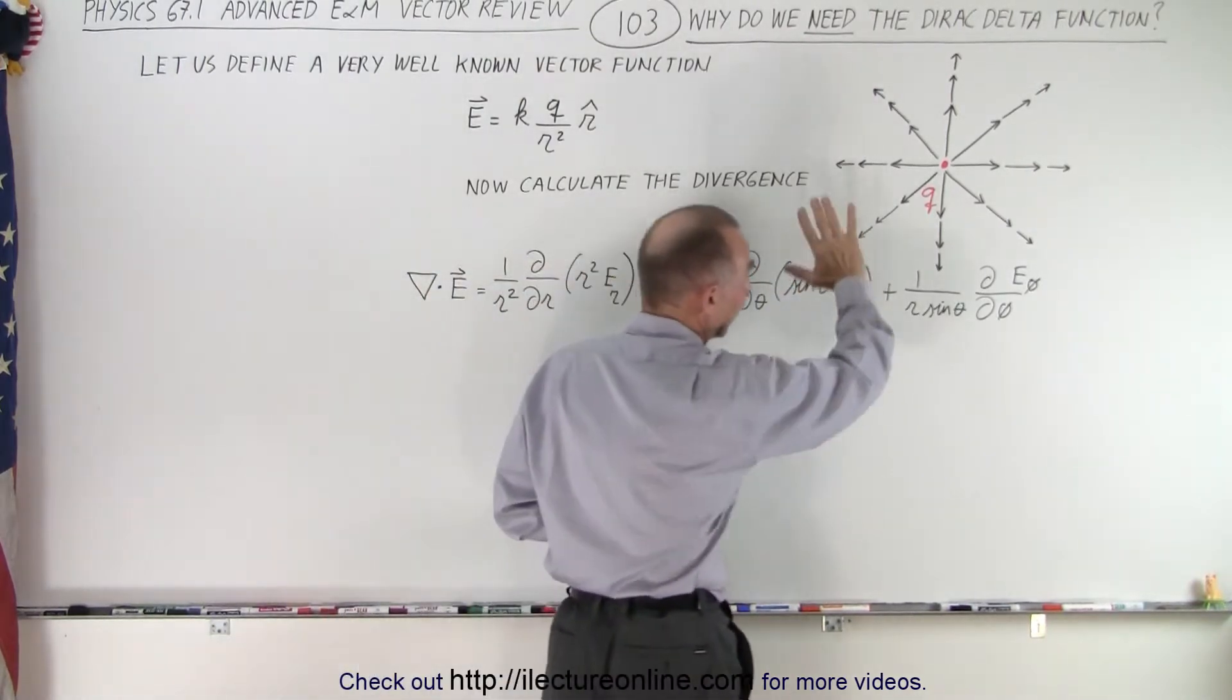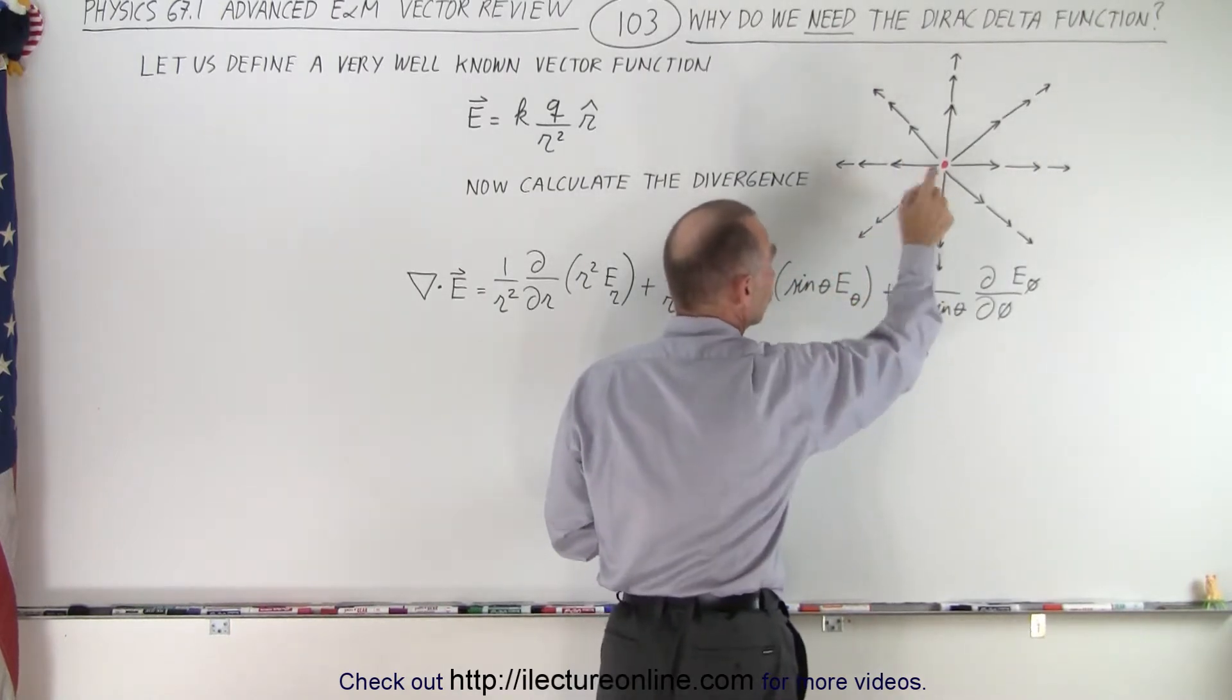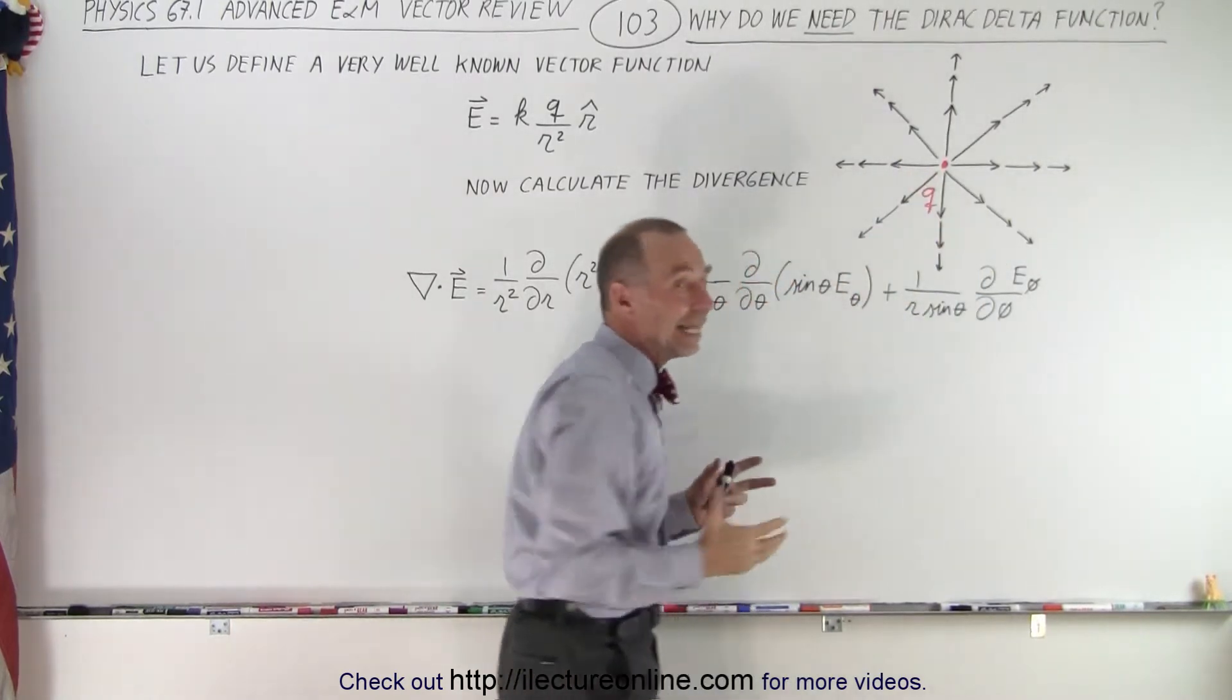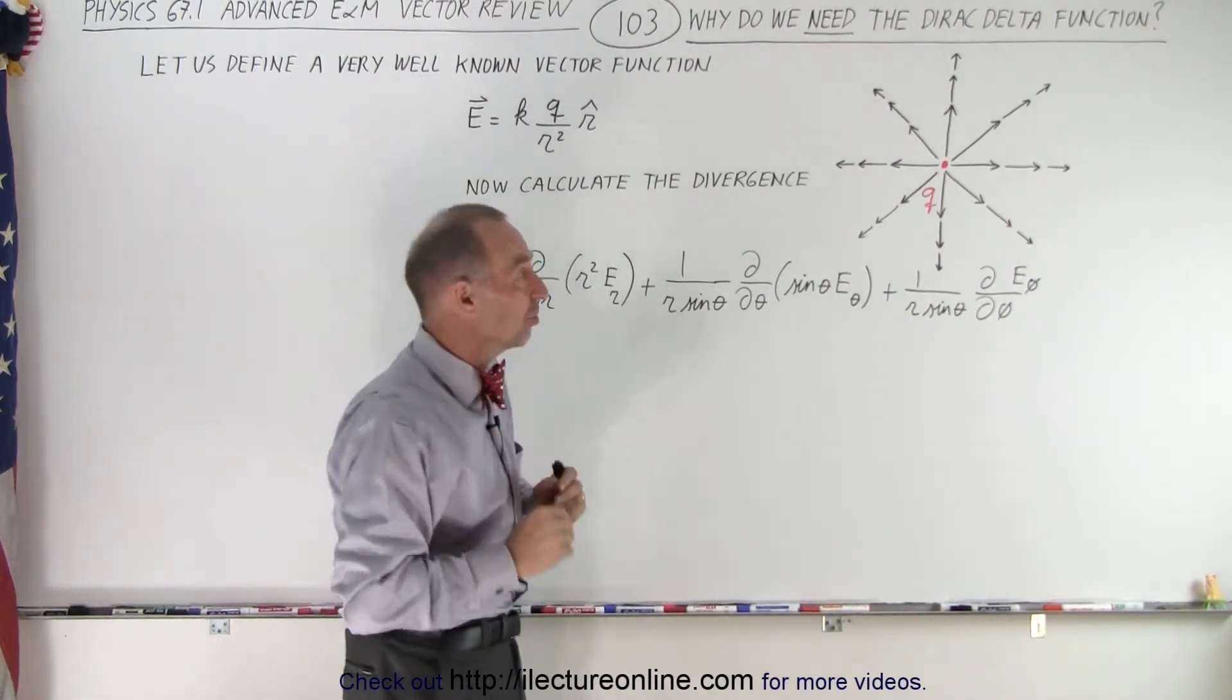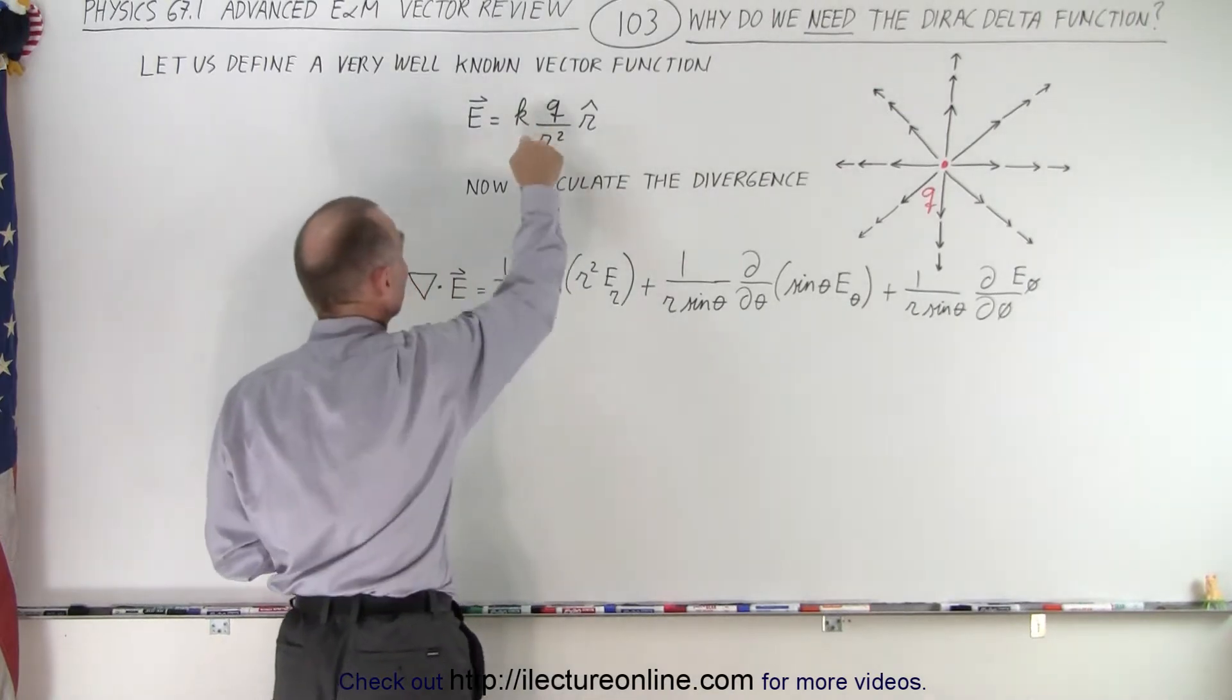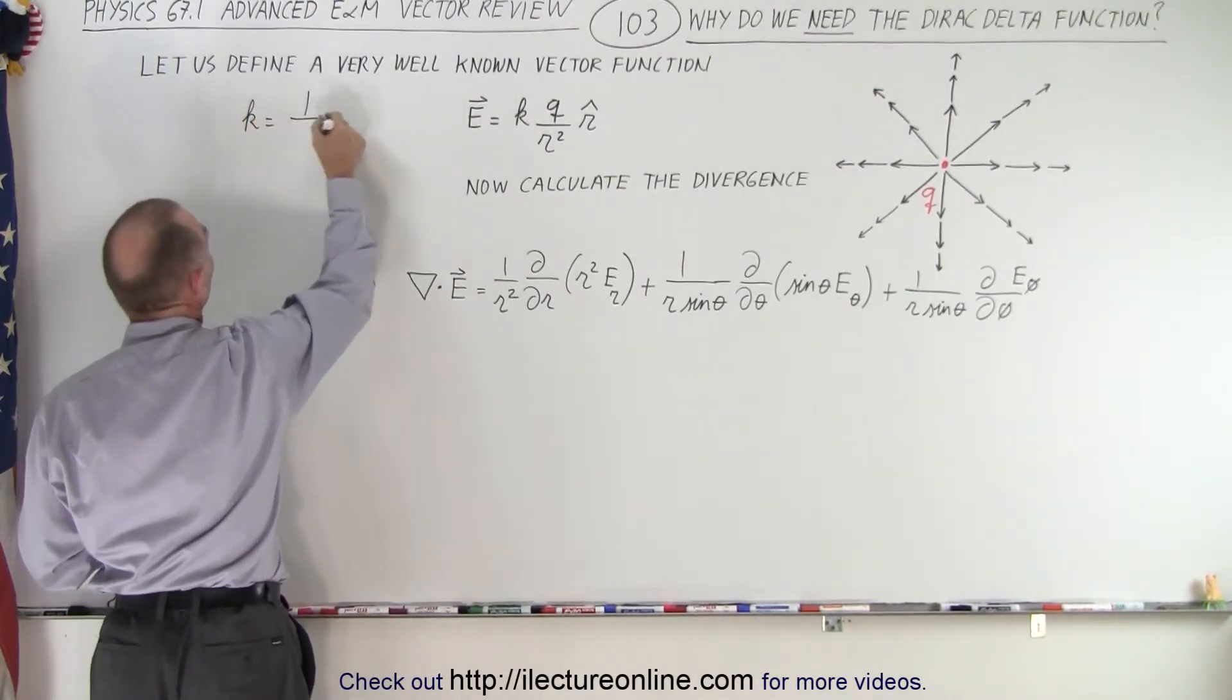So here we have a little drawing of that, at least in two dimensions, but you can imagine in all dimensions. You see there's a point charge, and the electric field is emanating away from that charge. Of course, as you go further away, the electric field diminishes in strength as the function 1 over r squared. Remember that k is equal to 1 over 4π epsilon sub nought.